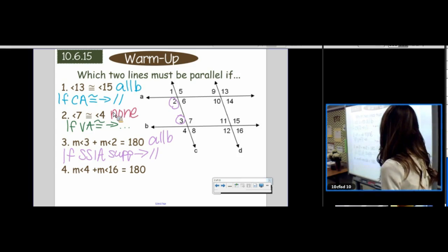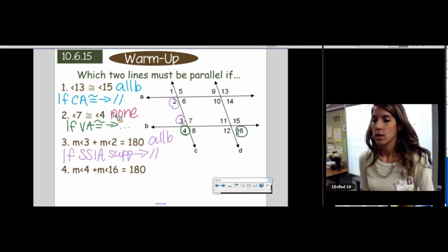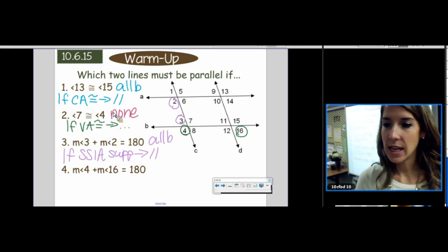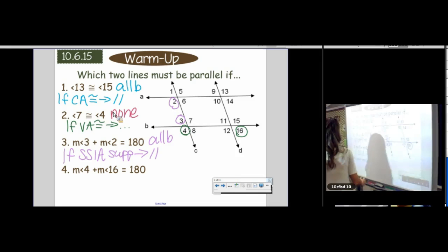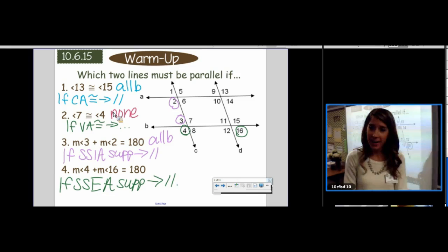Four and sixteen. Angle four and angle sixteen are same side exterior angles. They need to be supplementary as well if we want to have parallel lines.